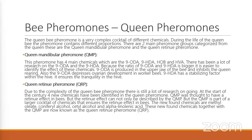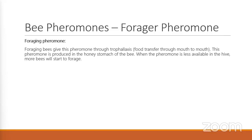The QRP has more of an acid-based, alcohol chemical makeup. These newer chemicals are still being completely studied — they're still trying to figure out how and where they're produced. Originally they only thought it was those first four chemicals; they've now identified four additional chemicals in the queen pheromone. The foraging pheromone is transferred mouth to mouth from the bees. This is when they will know it is time to go out and forage and collect resources for the hive. When this pheromone is not as available in the hive as it should be, they will know it's time to go out and produce.